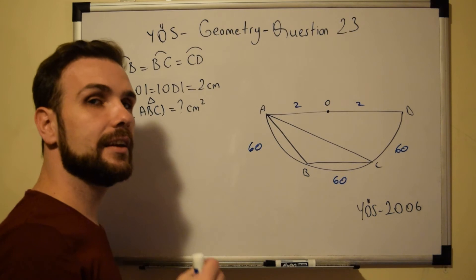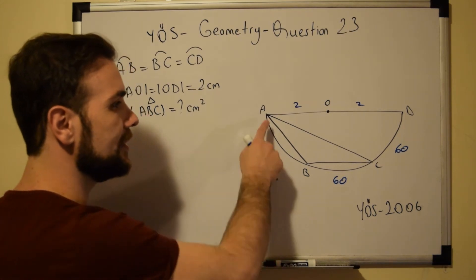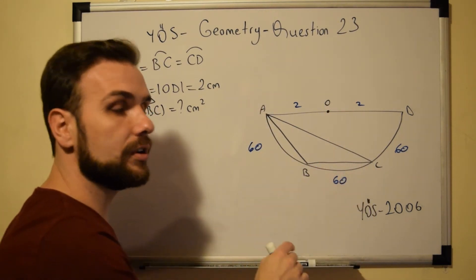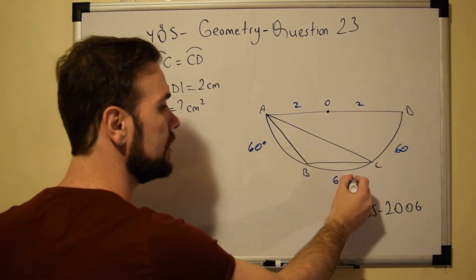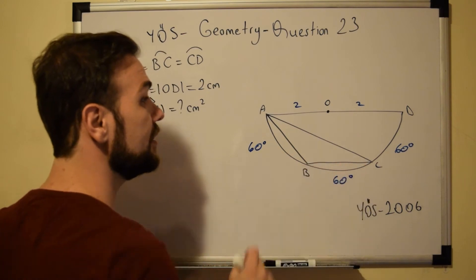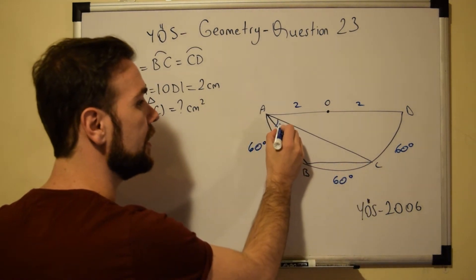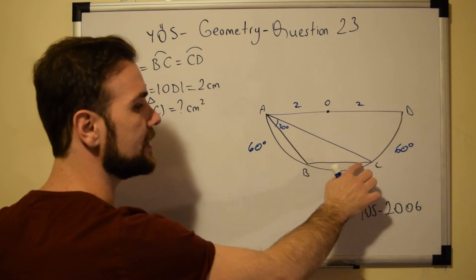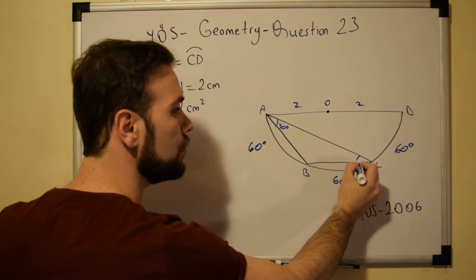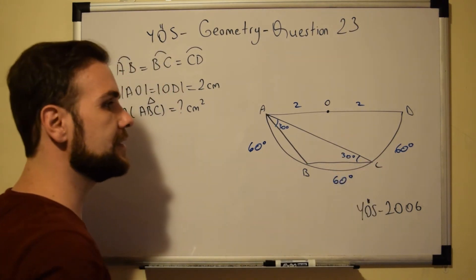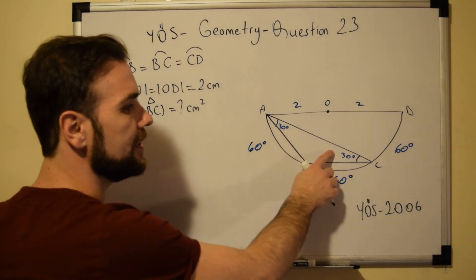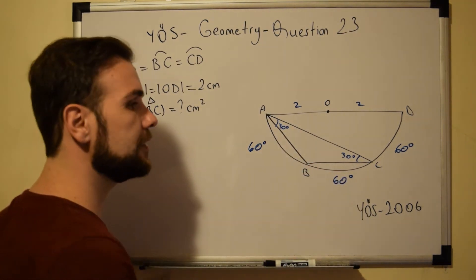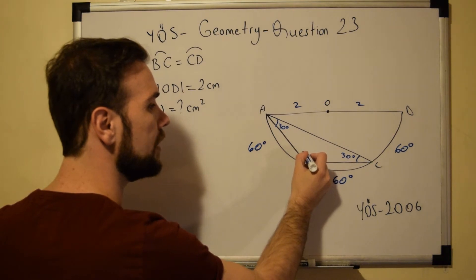The interior angle of a circle is half of the arc it faces. So if chord BC is 60 degrees, the interior angle at A will be 30 degrees. Similarly, chord AB faces angle C, so angle C is also 30 degrees. Since the interior angles of a triangle sum to 180 degrees, and we have 30 + 30 = 60, the remaining angle B is equal to 120 degrees.